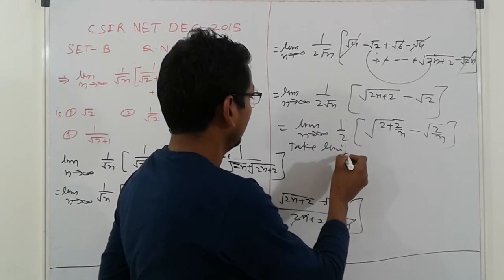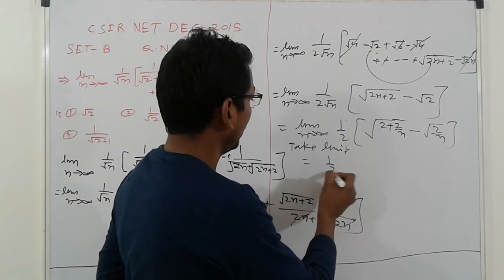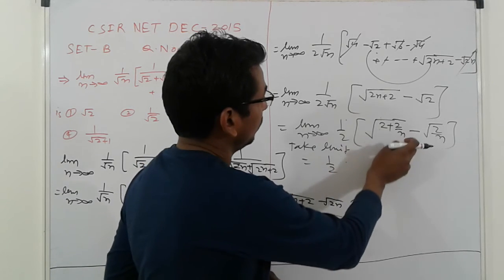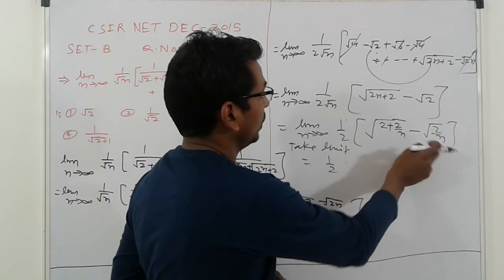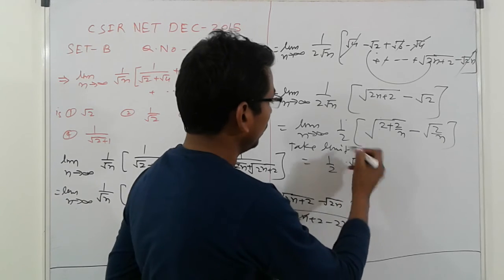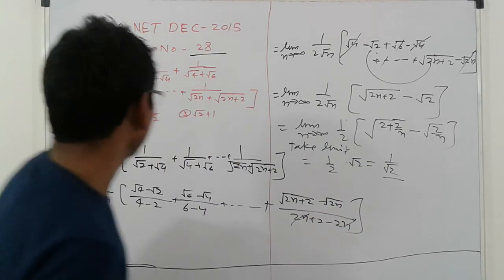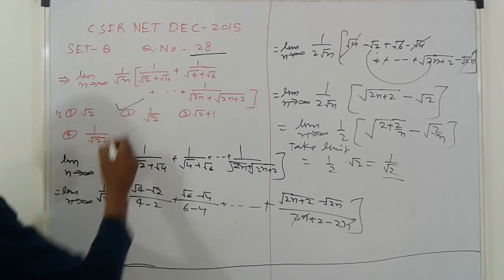Take limit. So here 1 by 2. And here, 0. 2 by infinity is 0, which is 0. Only root 2. So simplify then 1 by root 2. So that is, second answer is correct.